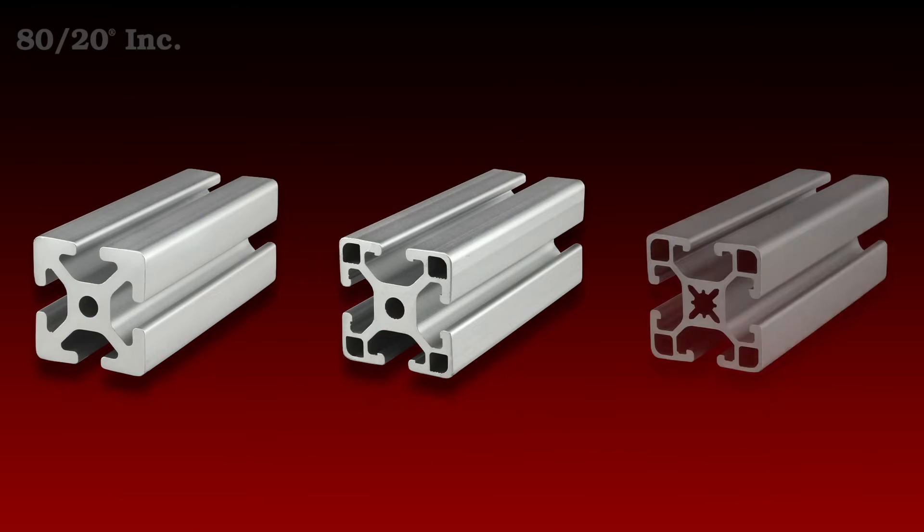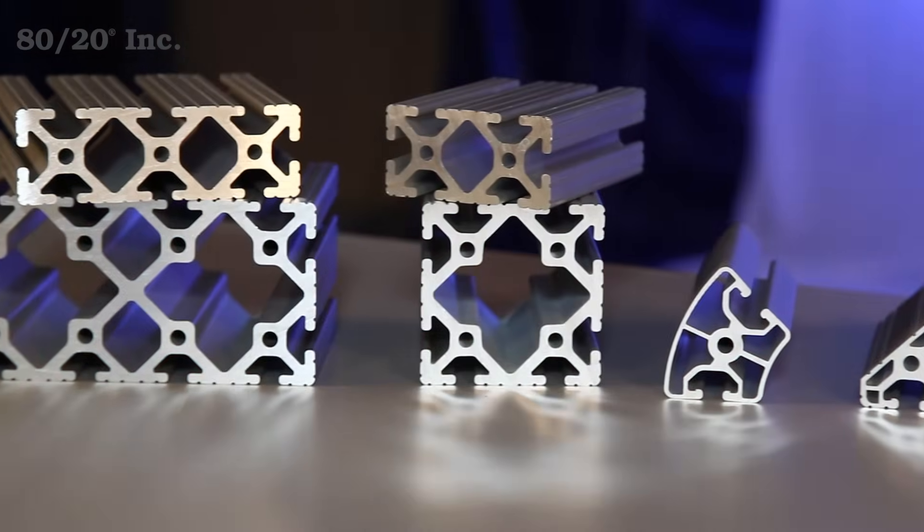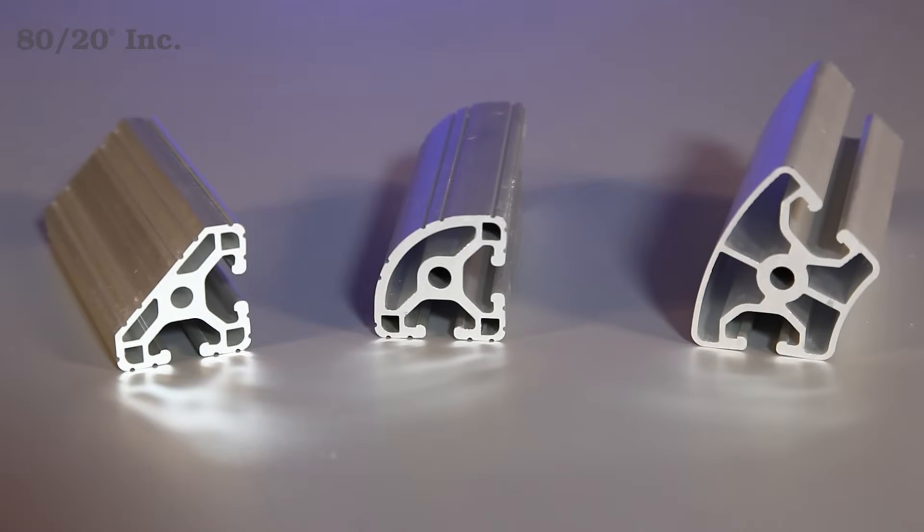We have standard, light, and ultra light available to give you options when it comes to weight and strength, as well as a range of shapes to choose from. We have square, rectangle, angled, and radius.